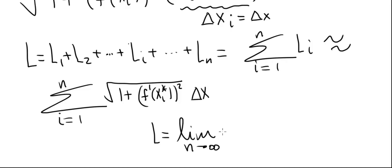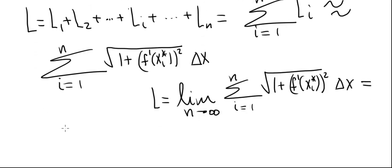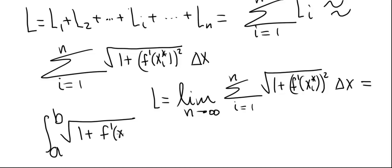The actual arc length equals the limit as n goes to infinity of this summation — as we take more and more subintervals, making them finer and finer, the line segments get closer and closer to the actual length. So this is the limit of the summation from i equals 1 to n of the square root of 1 plus f prime of xi star squared times delta x. We recognize this as a Riemann sum, and by the fundamental theorem of calculus this limit equals the definite integral from a to b of the square root of 1 plus f prime of x squared dx. That's why the arc length formula is true.